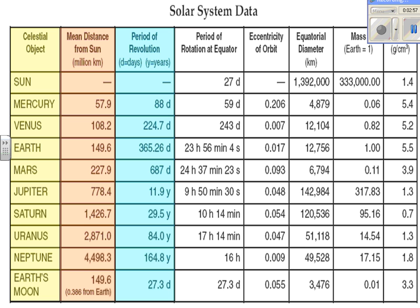The next column is the period of revolution, given in units of days or years. The inner planets' period of revolution is in days — Earth's is 365 and a quarter days. As you go to the Jovian planets — Jupiter, Saturn, Uranus, Neptune — the period of revolution is in years. Simply stated, the further you are from the Sun, the longer the period of revolution. This is a typical question asked on the Earth Science Regents.